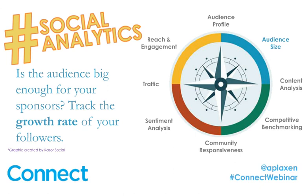If you're getting 200 new followers every month, your audience is going to be much bigger in nine months than it is now. Track that information and provide a realistic audience size. Let them know it's based on the current growth rate and that it may be more or less — do not guarantee an audience. Things happen; you can lose an audience. Just say this is based on your current growth rate.